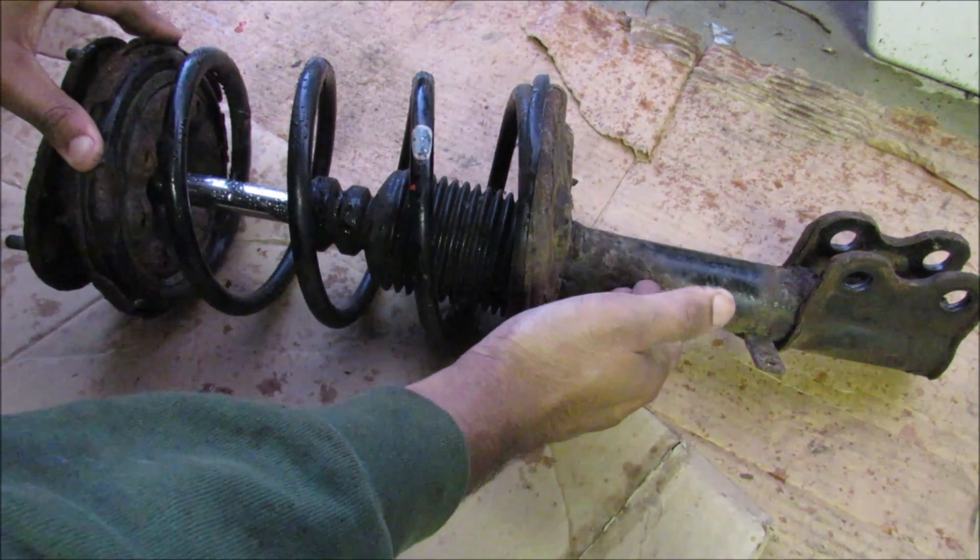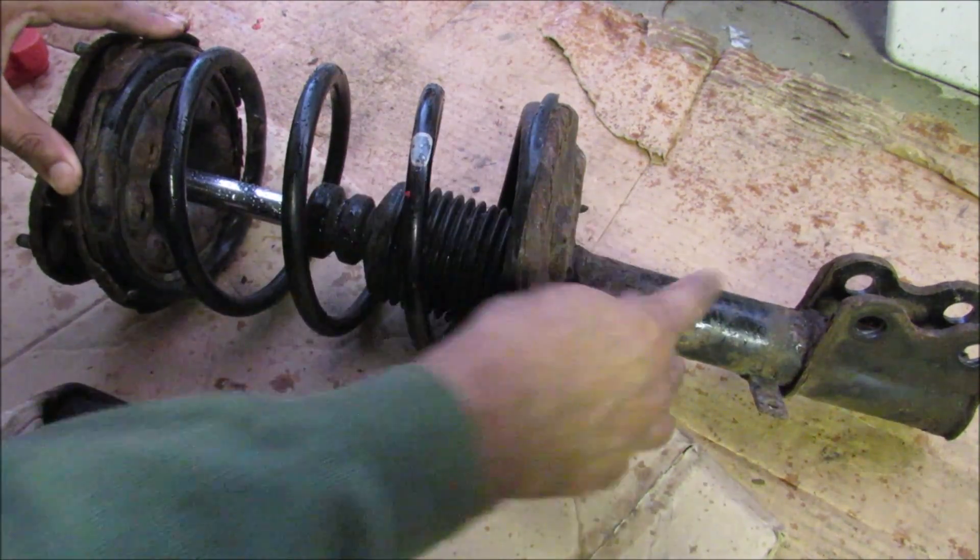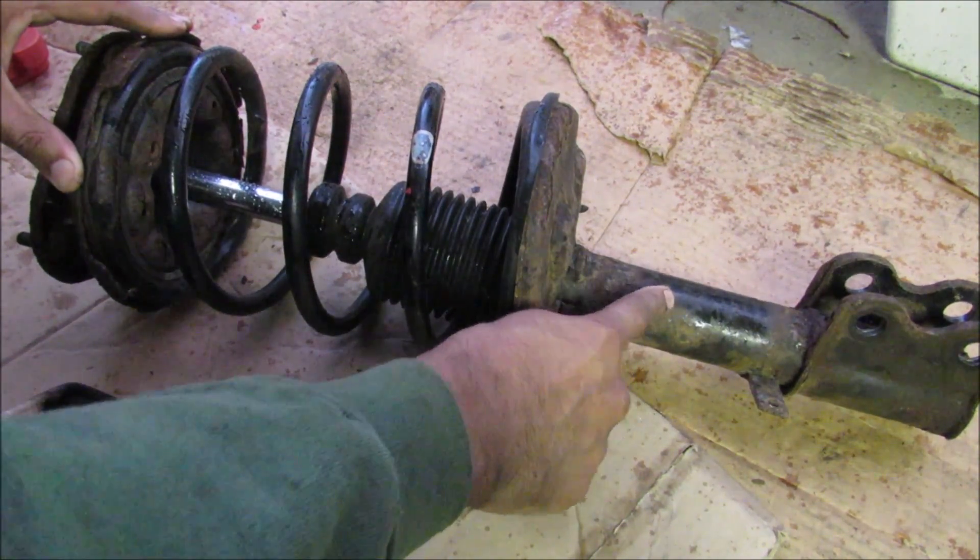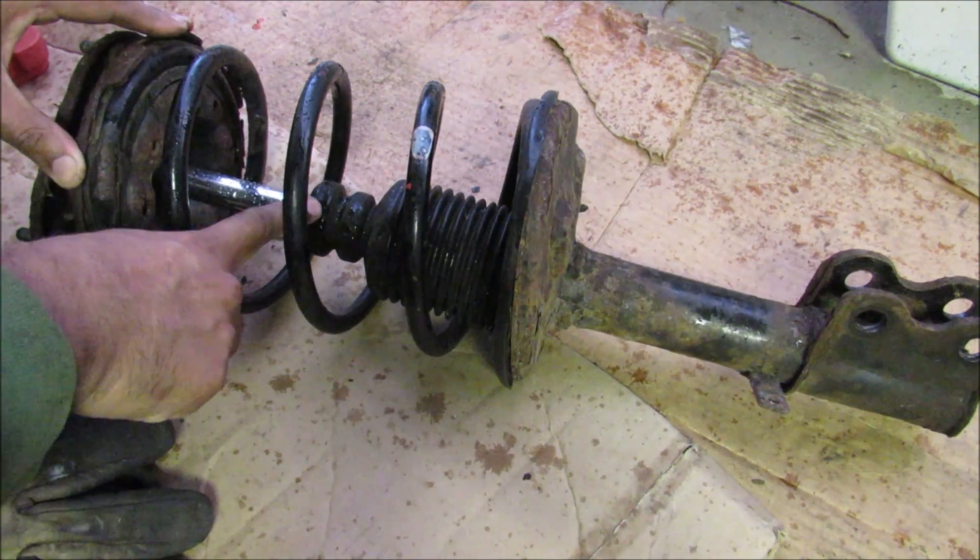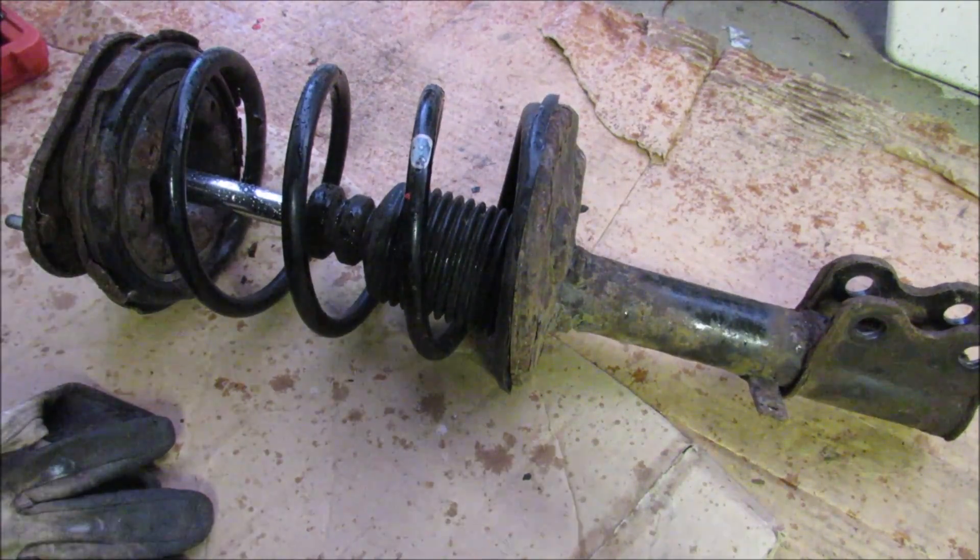Today I'm going to show you how a shock absorber works in a coilover strut type suspension. This type of suspension has a shock absorber at the bottom, then inside we have a dust boot, a bump stop, the coil, the spring seat, and the strut mount at the top which has a bearing.